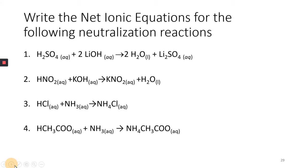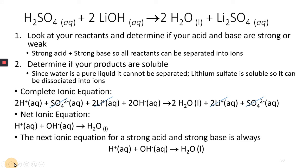Let's do some examples of writing ionic equations for these four neutralization reactions. For the first one, look at your reactants — the steps you should do for all neutralization reactions: determine if your acid and base are strong or weak. In this case, sulfuric acid is a strong acid, and lithium hydroxide — lithium is a Group 1 metal — so that is a strong base. Since both are strong, we can separate them into ions because they dissociate or ionize completely.